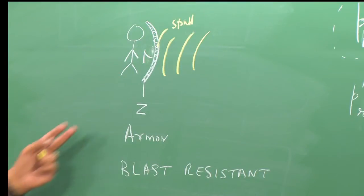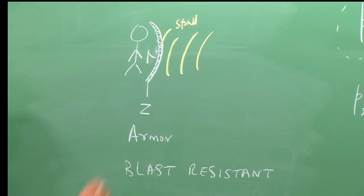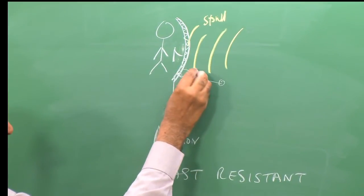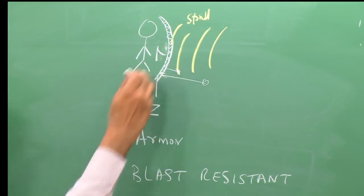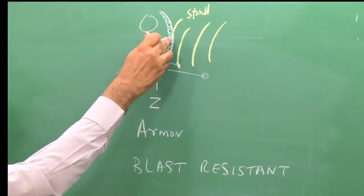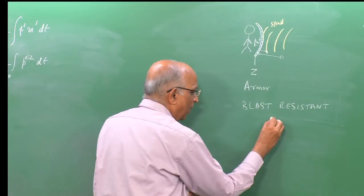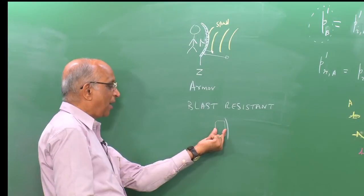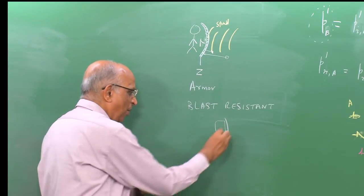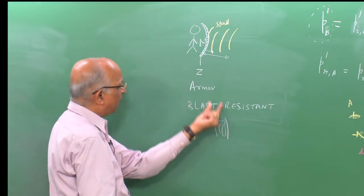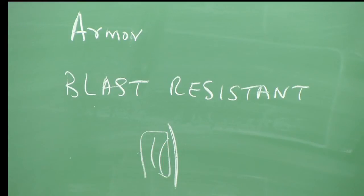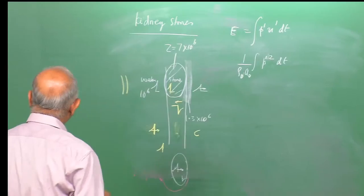An armor helps against fragments from the blast — if the impact is not too high, the fragment rebounds. It helps against secondary effects rather than primary blast effects. A bullet-proof material protects against fragment effects, not the blast wave itself, which can still transmit through and cause damage inside.